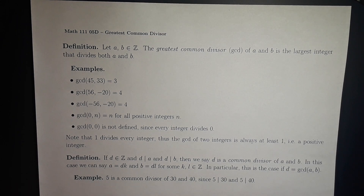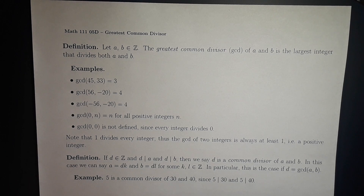For example, the GCD of 45 and 33 is 3, since 3 divides 45 and 3 divides 33, and 3 is the largest such integer.